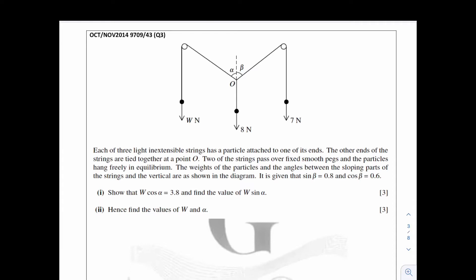This question is in the Forces and Equilibrium chapter. Each of the three light inextensible strings has a particle attached to one of its ends. The other ends of the strings are tied together at point O. Two of the strings pass over fixed, smooth pegs, and the particles hang freely in equilibrium. So the key word here is in equilibrium. The weights of the particles and the angles between the sloping parts of the string and the vertical are shown in this diagram. It's given that sin beta is 0.8 and cos beta is 0.6. For part one, you are asked to show that w cos alpha is equal to 3.8, and then find the value of w sin alpha.